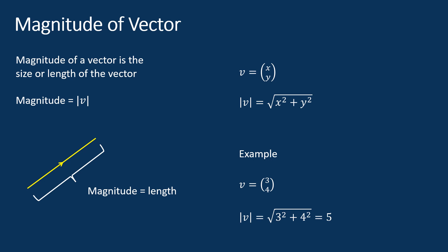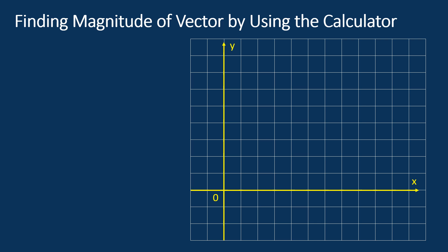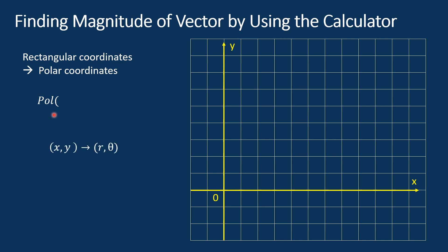The magnitude of a vector is an important quantity as it gives us information about the size or intensity of the vector. In the Casio scientific calculator, we may find the magnitude of a vector by using the rectangular coordinates to polar coordinates conversion. I'm not going to discuss rectangular coordinates and polar coordinates in detail in this video — you may search for it on Google or YouTube.